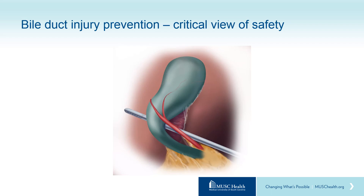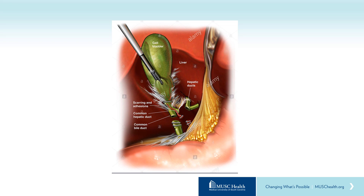Two and only two tubular structures should be seen entering directly into the gallbladder, and only then are these structures divided. This illustrates the classic common bile duct injury, most often encountered when there is severe inflammation in the hepatocystic triangle. The surgeon dissects medial to the common bile duct, which is retracted laterally and appears to enter directly into the gallbladder, seeming to be the cystic duct. The common bile duct is divided distally, and then the common hepatic duct is also divided, resulting in a segmental loss of bile duct.